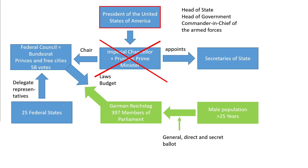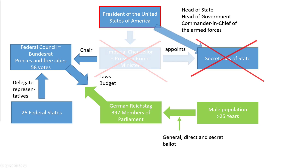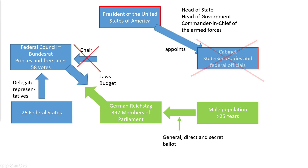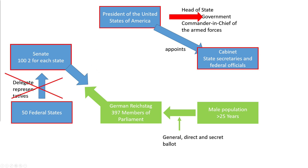The legislative branch will not be part of the following description. A chancellor or prime minister does not exist. The president of the United States is head of state, head of government and commander-in-chief of the armed forces. He appoints his cabinet, the state secretaries and federal officials — a rather strong office. The federal council can be compared to the Senate.